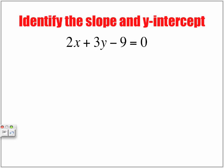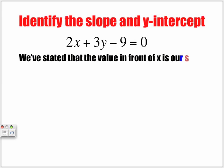Identify the slope and y-intercept. So here we have 2x plus 3y minus 9 equals 0. We stated that the value in front of x is our slope.